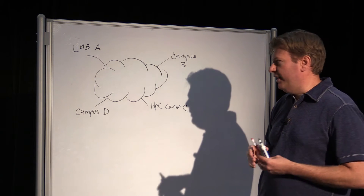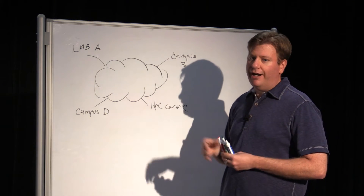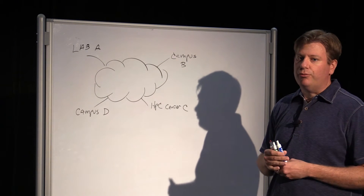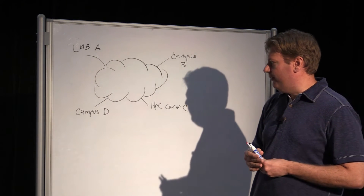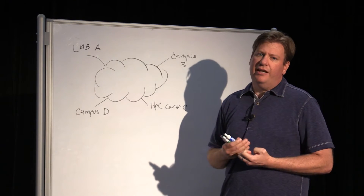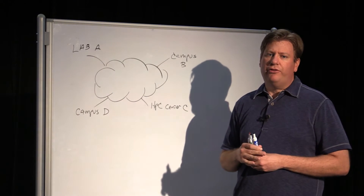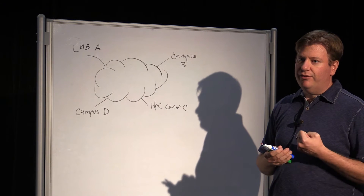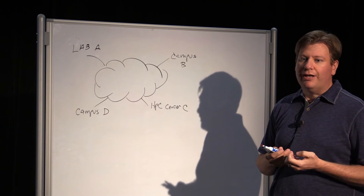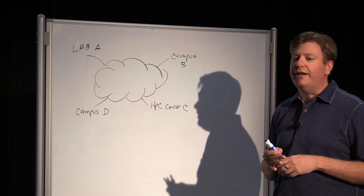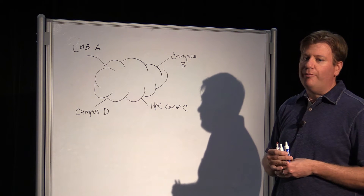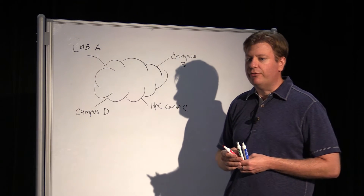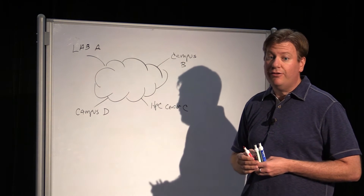The common thread that binds these things together is that they require a high performance network to sit between these different resources to do their actual job of science. And they need to have a very good indication of how well this network is performing, particularly when involved in activities such as video collaboration, or bulk data movement whenever they are trying to move around the results of their research and perform analysis or storage activities after the fact.